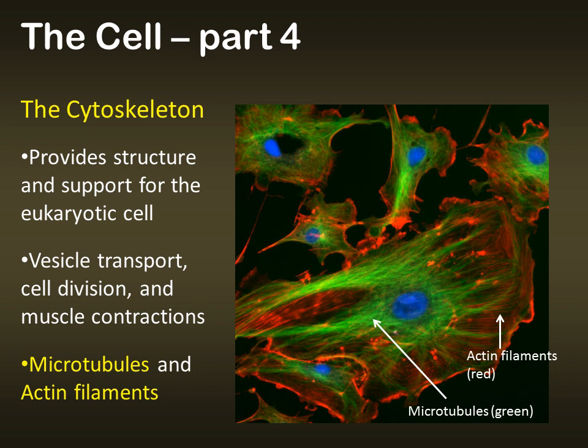They're composed mainly of two different kinds of protein chains called microtubules, as you can see here in this picture in green, and actin filaments in red. The nucleus here is in blue. Notice how the microtubules are more centrally located and larger than the thinner actin filaments, which are more associated with the cell membrane.